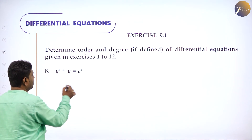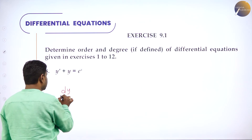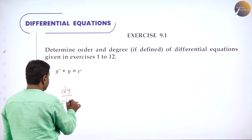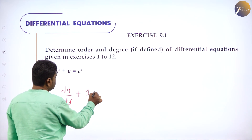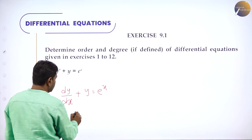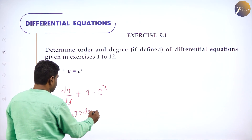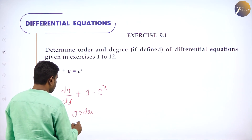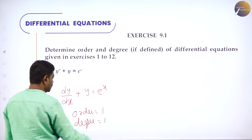Next: y' + y = eˣ, written as dy/dx + y = eˣ. Order: between d and y we have 1, so order is 1. Degree: overall power is 1. So order is 1 and degree is 1.